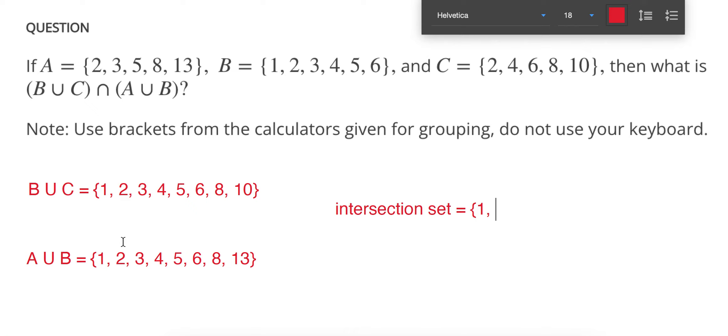So one is in both of them, two is in both of them, three is in both of them, four is, five is, six is, eight is, and that's it. Ten is in the first set, but ten is not in the second set, so we don't write that in our answer. Thirteen is in the second set, but not in the first set.